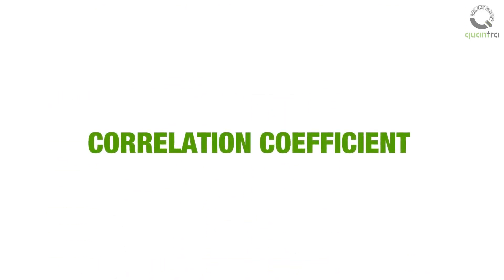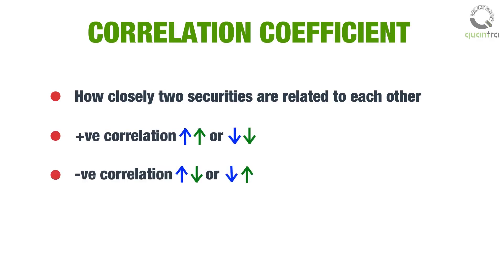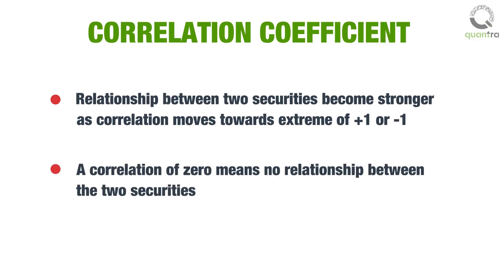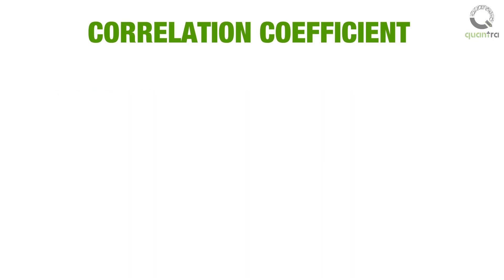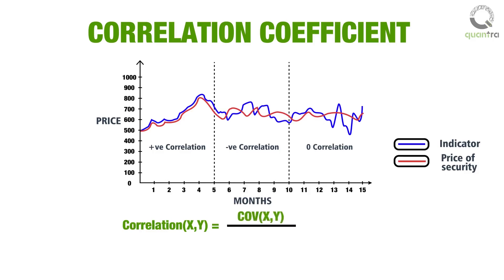The Correlation Coefficient indicator tells how closely two securities are related to each other. A positive correlation indicates that the two securities move in the same direction — up or down — while if two securities move in opposite directions, they will have a negative correlation. Correlation ranges between plus 1 and minus 1, and as the correlation moves towards the extremes, the relationship between the two securities becomes stronger, while a correlation of 0 means there is no relationship. Correlation can also identify the relationship between an indicator and a security, and is calculated by dividing the covariance between two securities by the product of their standard deviations.